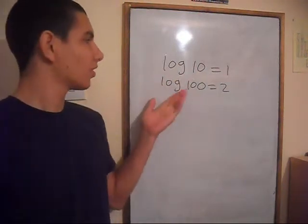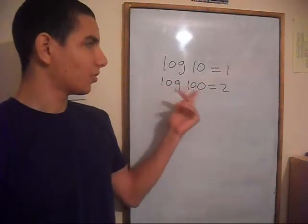If you do the same for the number 100 you get the answer is 2. Log 10 equals 1, log 100 equals 2. But when we use this function on a calculator, what is it doing to these numbers?